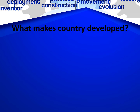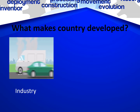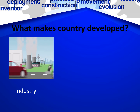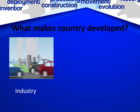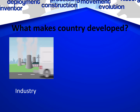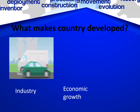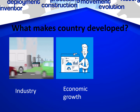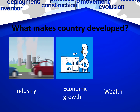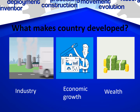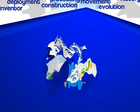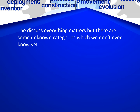The main factor that makes countries develop is industry. With the help of industry we can make our country develop, because industry produces goods that we can export to other countries and earn money, thus increasing the economy. Economic growth depends on industry — if the economic growth of a country is good, the country will be developed. Wealth is also very important, because we can invest wealth into industries to give development to our country.